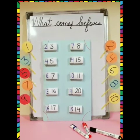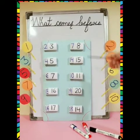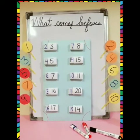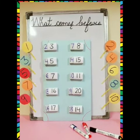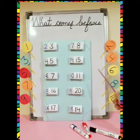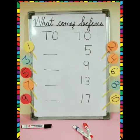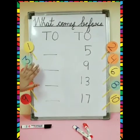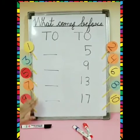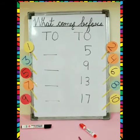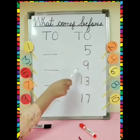As usual, I described 'what comes before' through an activity. But we need more practice, so let's practice together on my board. Here I have given you a few examples, so let's solve them. The first number is 5, and what comes before 5?